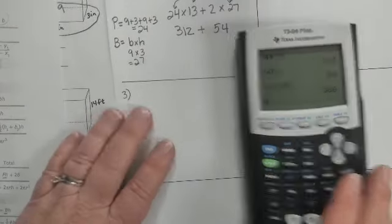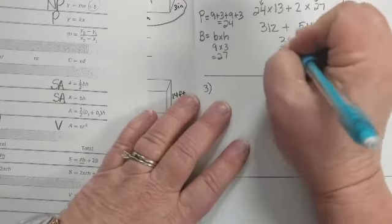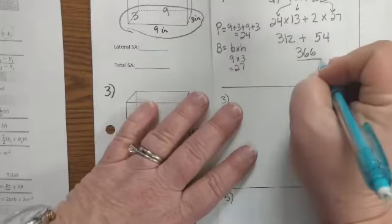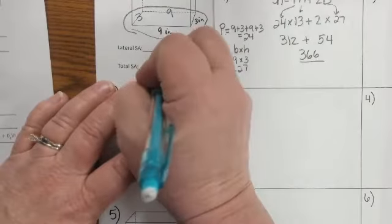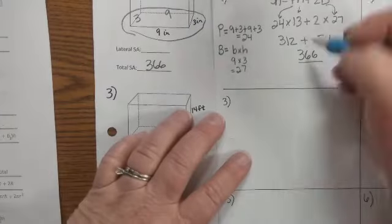And then I'm going to do 312 plus 54 and I get a total of 366. So my total surface area, which I'm going to write here, is 366. And remember, the number before the plus sign is my lateral, and that is 312.